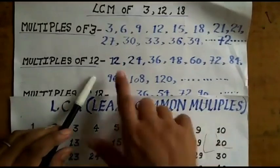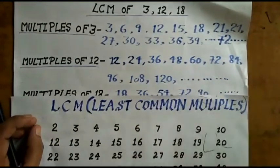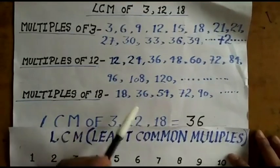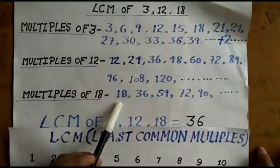Multiples of 12 we have starting 12 and last we have 120 etc and so on. And next we have multiples of 18 starting from 18 and last we have 90 etc and so on.